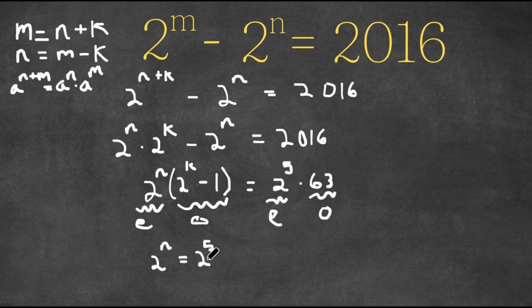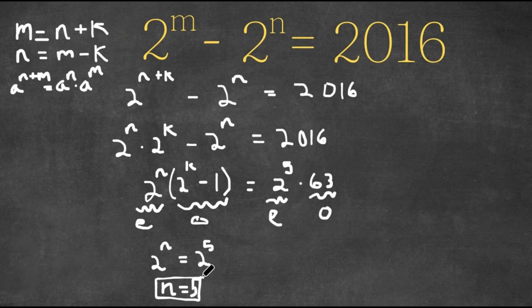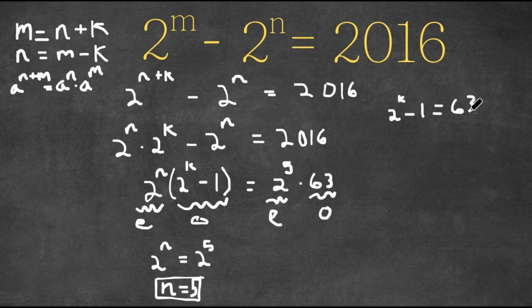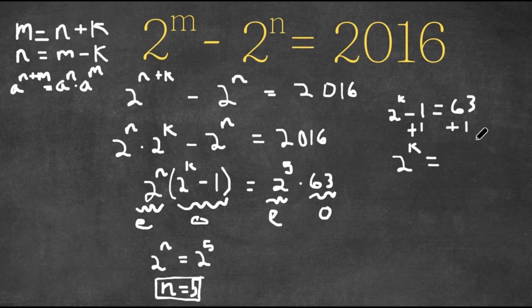Because these two have the same bases, we know the exponents are equal to each other, meaning n is equal to 5. Now we set the odd parts equal to each other: 2 to the power of k minus 1 equals 63. Adding 1 to both sides gives 2 to the power of k equals 64. And 2 to the power of 6 equals 64, so k is equal to 6.